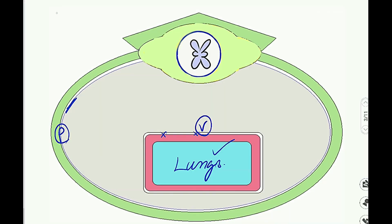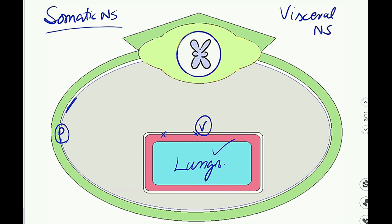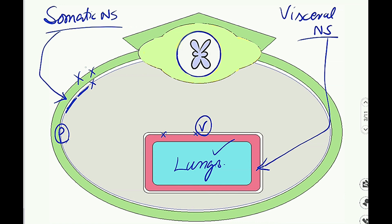We have two divisions of the nervous system: the somatic nervous system and the visceral nervous system. In this diagram I can show the target of both systems. The target of the somatic nervous system is the body wall, and the target of the visceral nervous system is the viscera. The somatic nervous system will supply the body wall up to and including the parietal pleura.